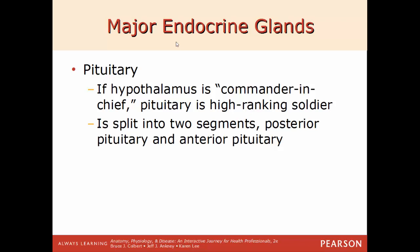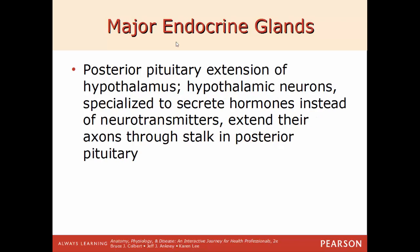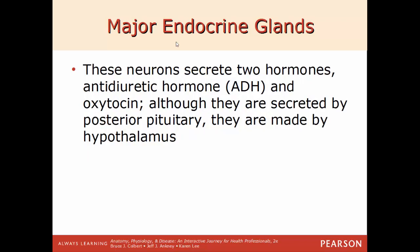The pituitary has two very distinctly different lobes — the anterior lobe and the posterior lobe — which are almost like two different structures fused together. The posterior lobe is really an extension of the hypothalamus; it contains hypothalamic neurons specialized to secrete hormones instead of neurotransmitters, extending their axons through the stalk into the posterior lobe. The posterior lobe does not synthesize hormones itself — the hormones released from this lobe, oxytocin and ADH, are made in the hypothalamus and merely stored in the posterior lobe until needed.